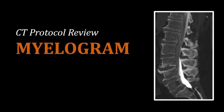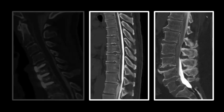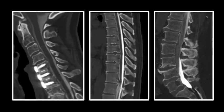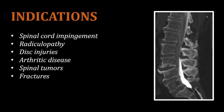This CT protocol review is about a procedure called the CT myelogram. The CT myelogram is especially looking for spinal cord impingement, which can happen at all levels of the spine. As a result, the protocol is very similar for all levels. The primary indication for CT myelogram is spinal cord impingement. It may also be indicated for a condition called radiculopathy, which is injury or irritation of the spinal nerves.